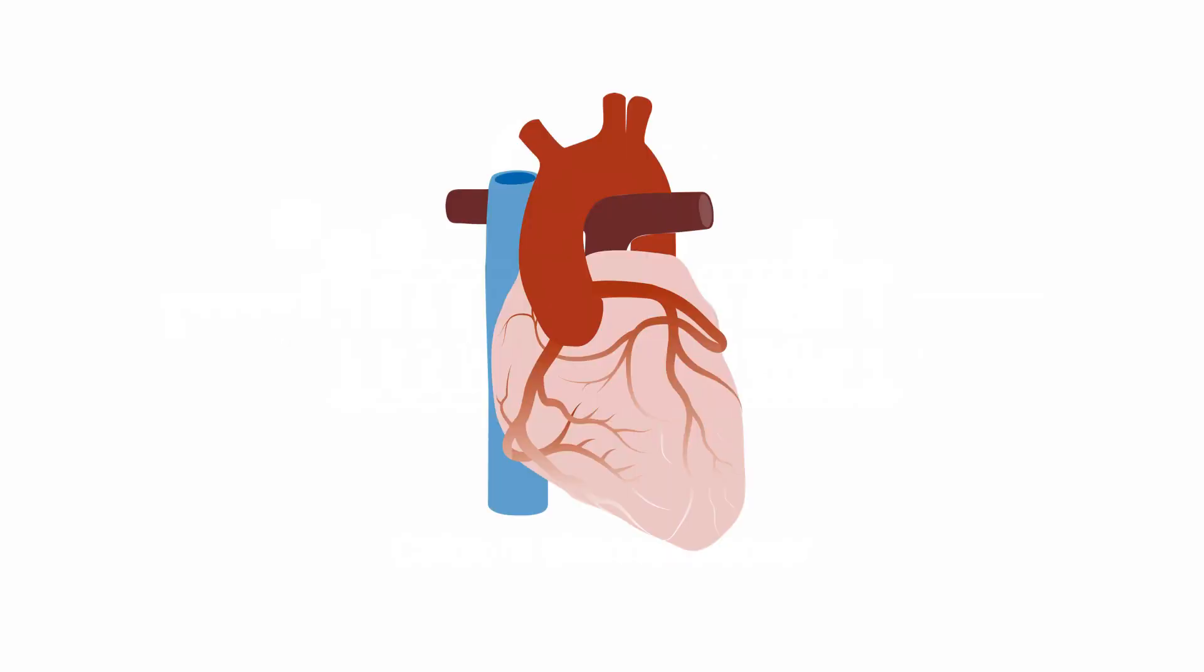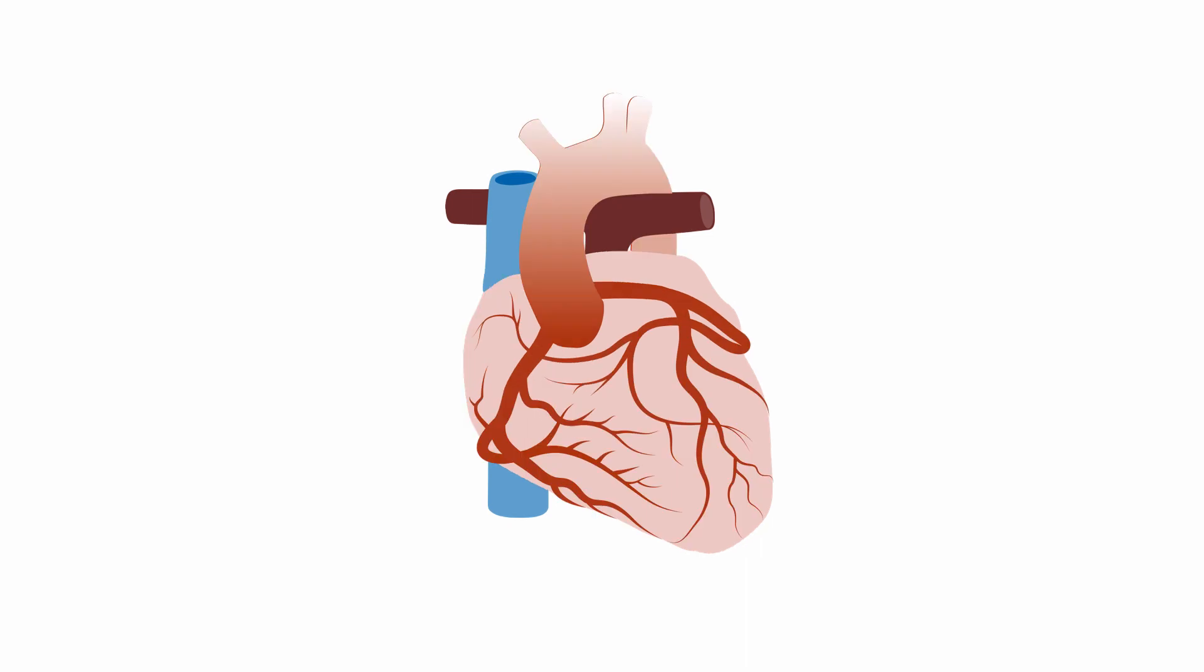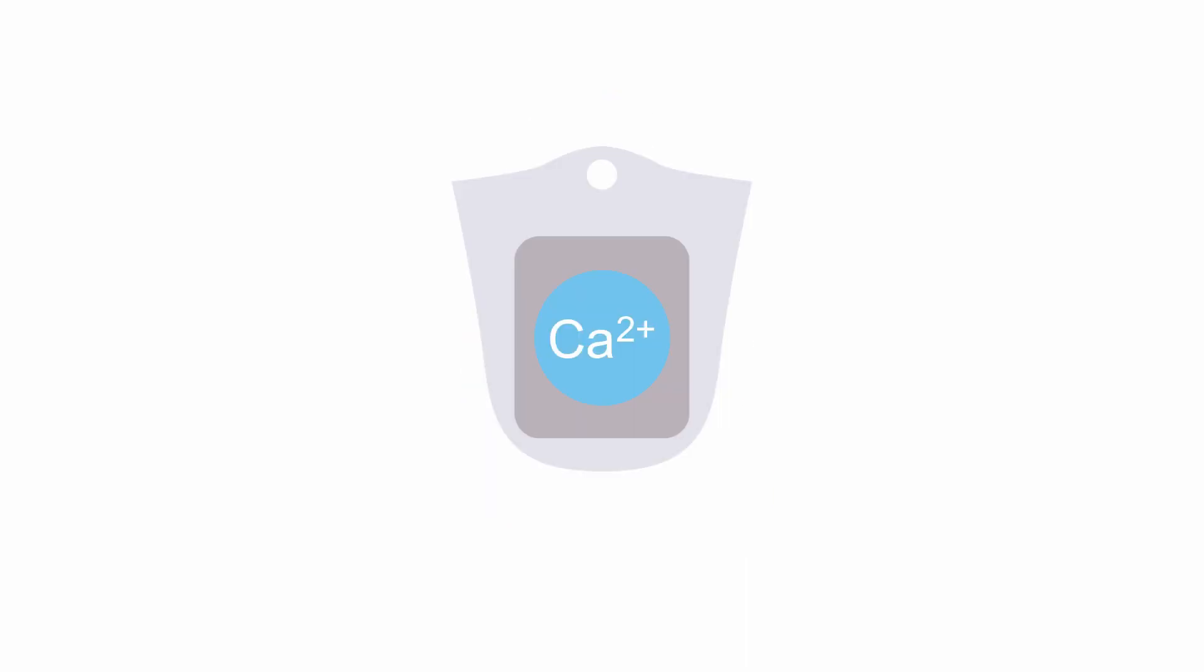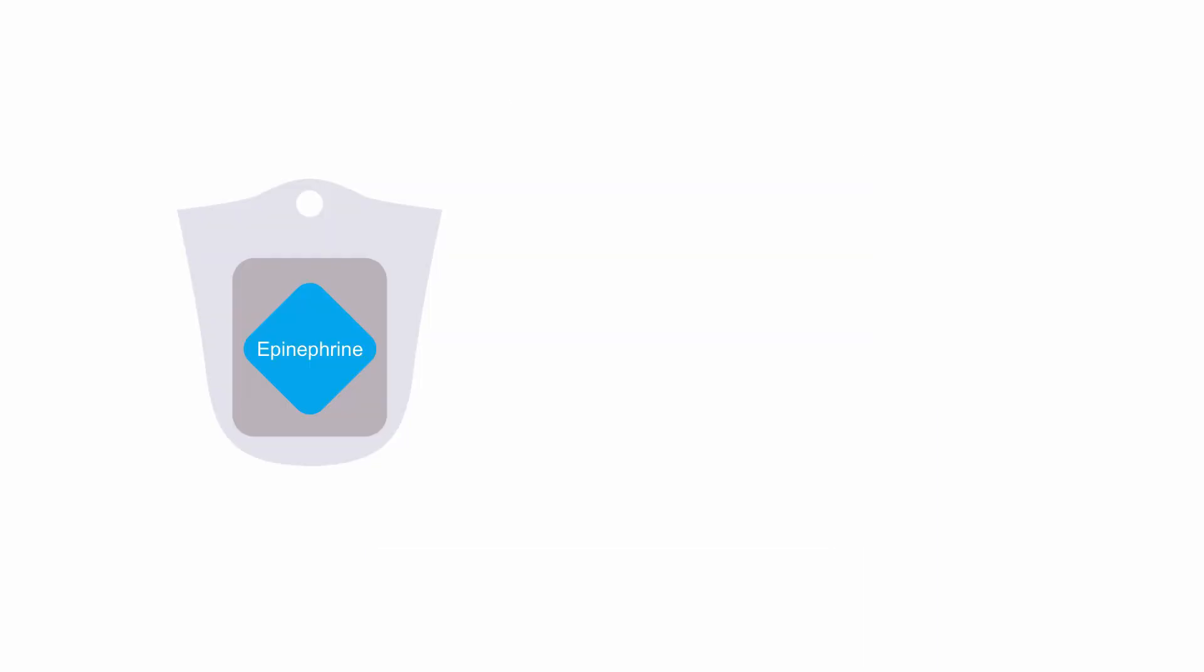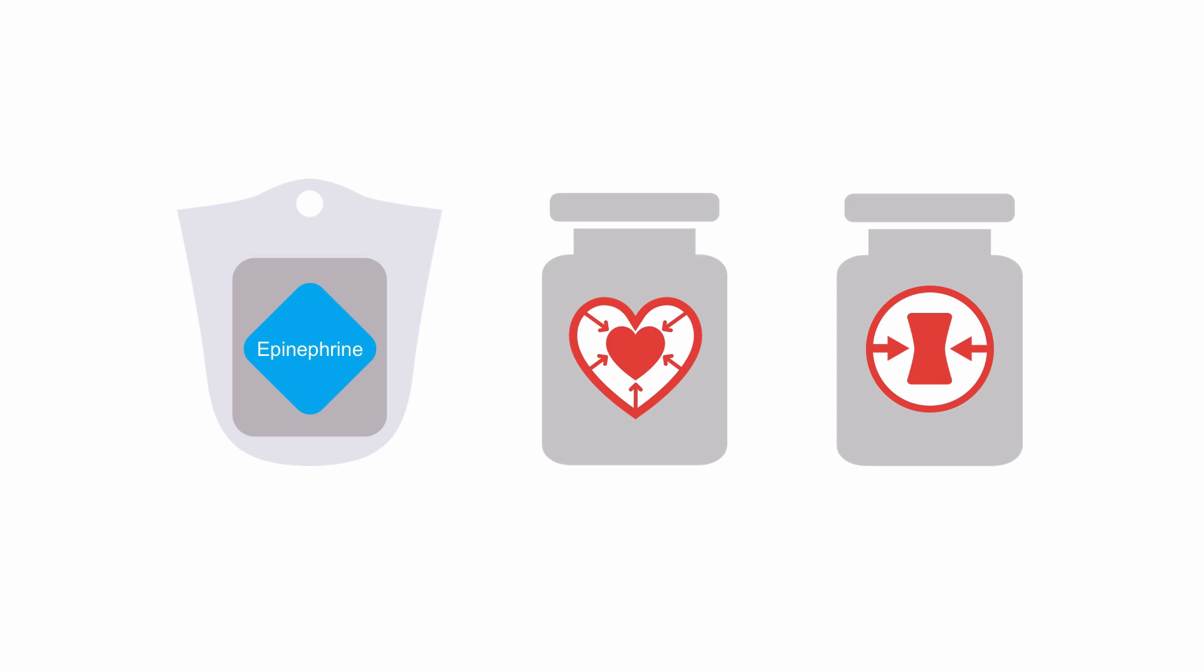This may be mitigated by aggressive calcium administration. In addition, glucagon may help create an alternate pathway for myocyte contraction. Epinephrine or other inotropes or vasopressors may be considered as adjunctive therapies as well.